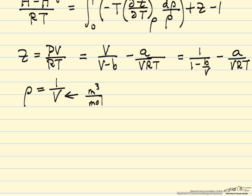And so the inverse is density. So the compressibility factor in terms of density is one over one minus B times the density, minus A times the density squared over RT.